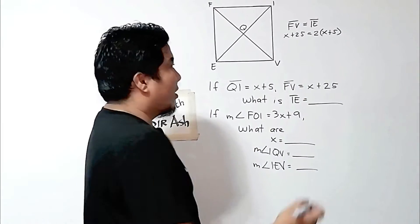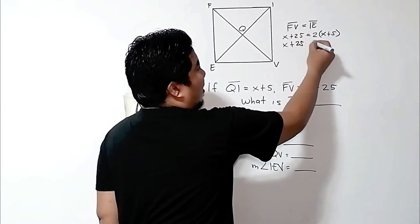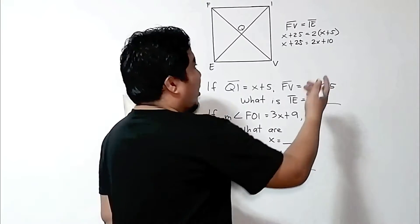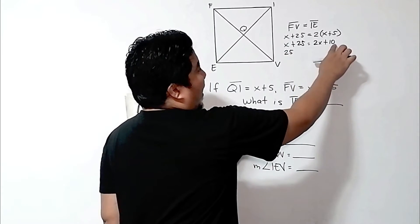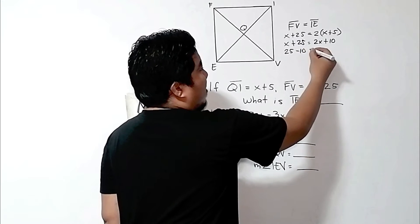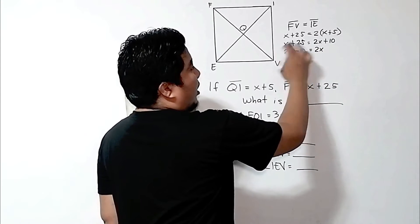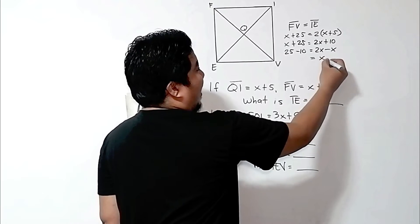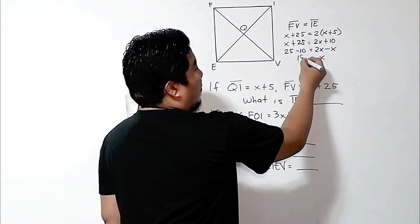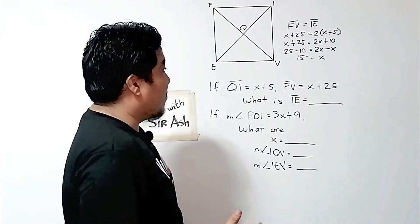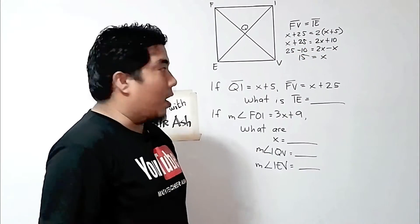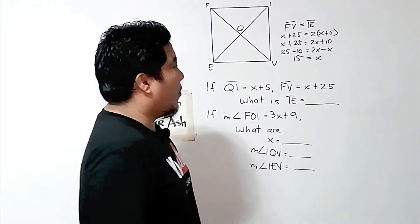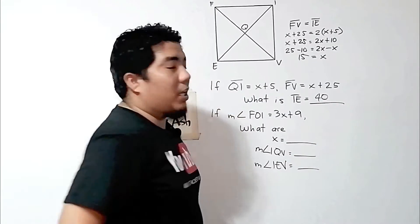For us to solve the value of X, we just need to simplify this equation, giving us 2X plus 10. By combining like terms and transposing, this will become 25, and the 10 here will be transposed, giving us minus 10. The 2X will remain, and we transpose X to the right side, giving us minus X. So 2X minus X is X, and 25 minus 10 is 15. Therefore, the value of X is 15. Since FV and IE are equal, substituting X into X plus 25 gives IE equals 40 units.